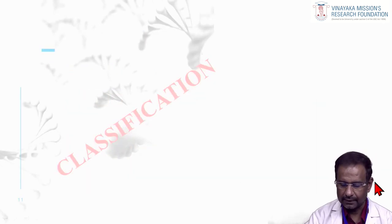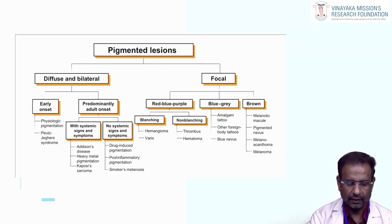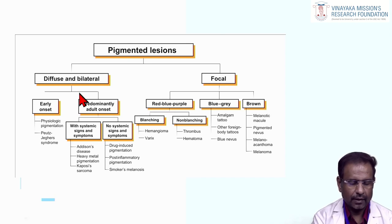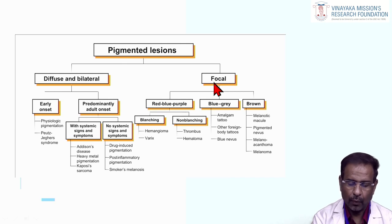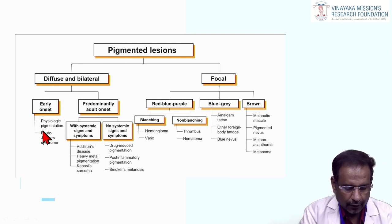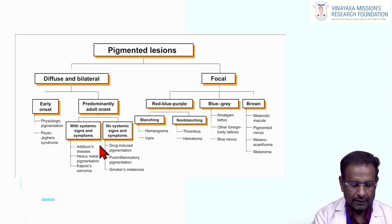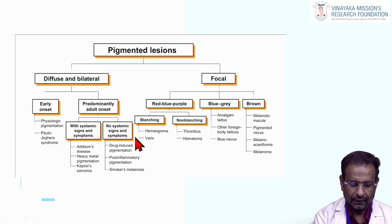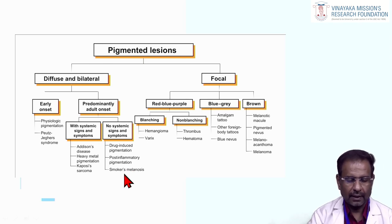For the classification of oral pigmented lesions, the lesions are divided into two main categories: diffuse and bilateral, and focal. Diffuse bilateral lesions are further divided into early onset and adult onset. Early onset includes physiological pigmentation and Peutz-Jeghers syndrome. Adult onset is further divided into those with systemic signs and symptoms — such as Addison's disease, heavy metal pigmentation, and Kaposi's sarcoma — and those without, such as drug-induced pigmentation, post-inflammatory pigmentation, and smoker's melanosis.